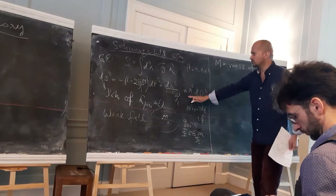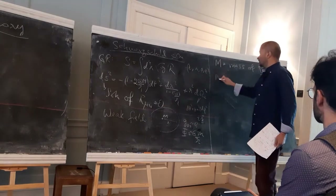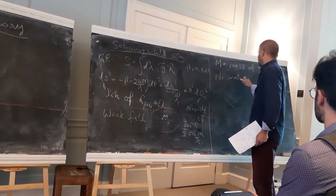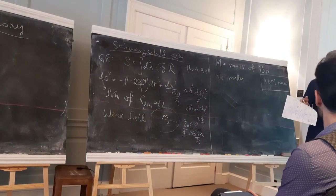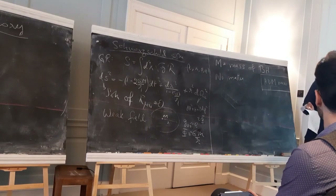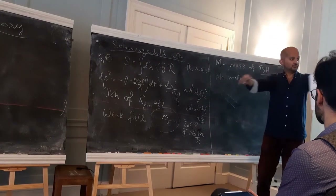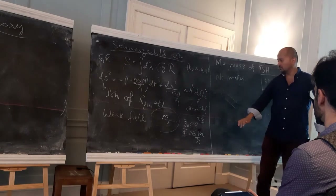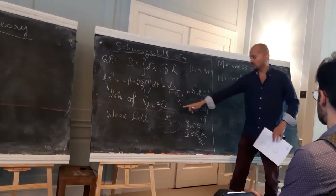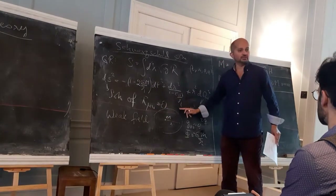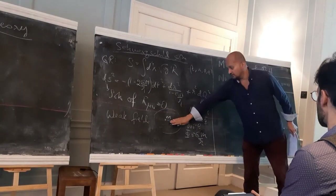Notice that this solution is a solution of the vacuum Einstein equations, R_μν = 0, which means there is no matter. The picture is that it's the endpoint of a collapsing star. Outside the surface of the star, the Schwarzschild solution is still a valid solution by spherical symmetry. The Schwarzschild solution extends all the way to r = 0 with no matter at all — all the matter has collapsed inside the horizon and fallen all the way to the singularity.